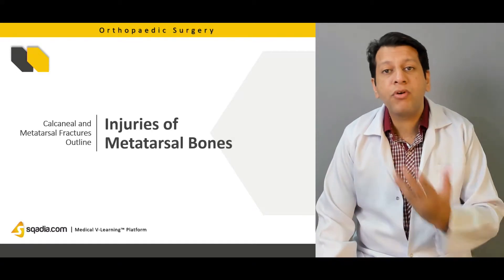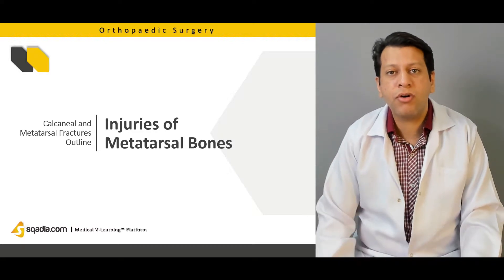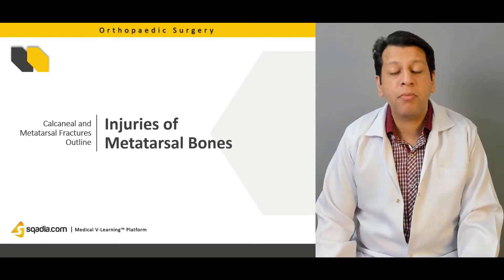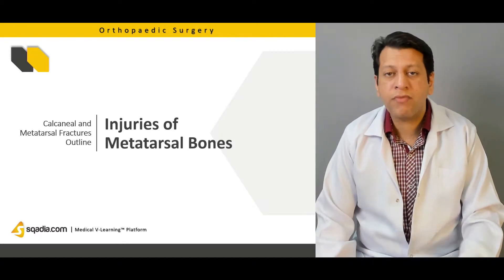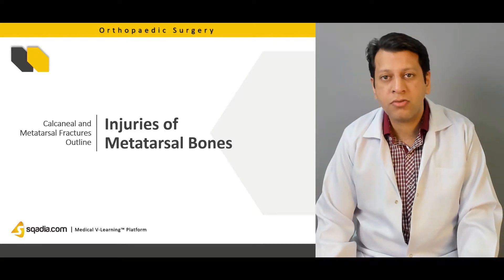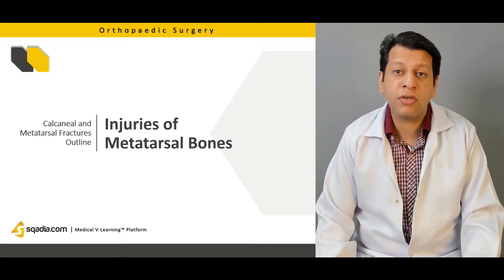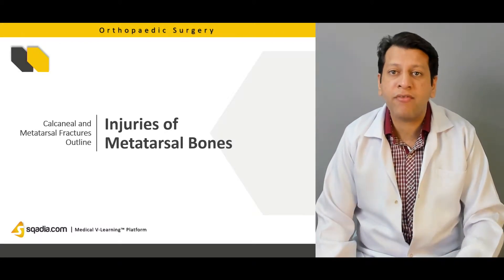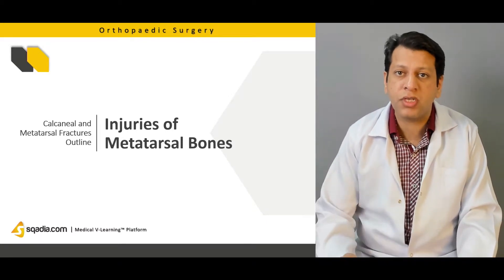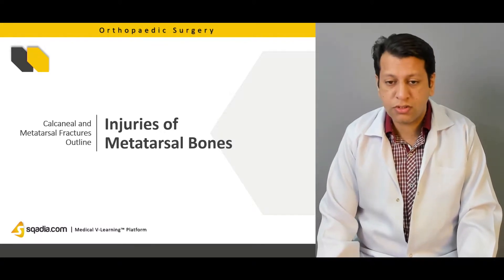Moving on to the forefoot — starting from the hindfoot discussing calcaneum and talus and going towards the forefoot — we will be discussing briefly the fractures of the metatarsals, which are five in number. These may include base fractures, fractures of the shaft, crush injuries which may occur due to trauma or a fall of very heavy objects on the foot, or avulsion fractures because there are a lot of tendons which are attached to these metatarsals.